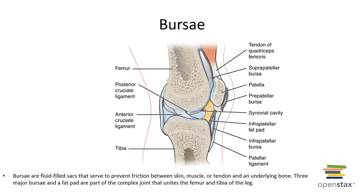Fat pads are another type of accessory structure in a synovial joint. They are localized masses of adipose tissue covered by a layer of synovial membrane, commonly superficial to the joint capsule. Fat pads protect the articular cartilage and act as packing material for the joint; when the bones move, the pads fill in the spaces created as the joint cavity changes shape.